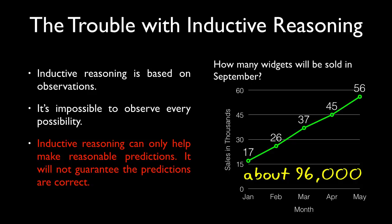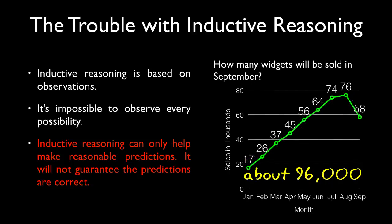If the pattern holds. The problem is, when we're talking about four or five months in advance, does the pattern have to hold? In this case, you can see that it didn't hold, and they definitely did not sell 96,000 widgets. So the second problem with inductive reasoning is that things can change, the pattern can change, and if it does change, there's no guarantees that the predictions will work.